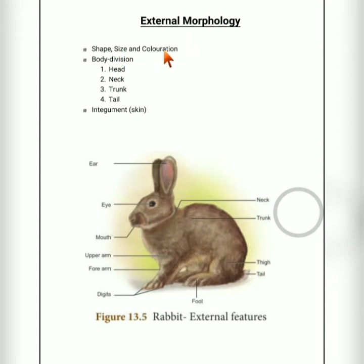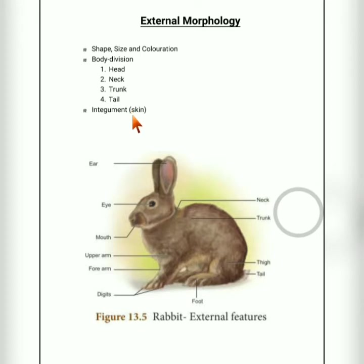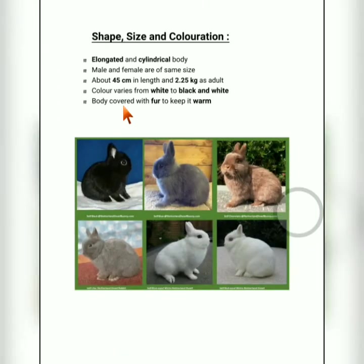Now we will move on with the external morphology. We will see three basic categories: first, shape, size and coloration of the rabbit; second, body division — that is head, neck, trunk and tail; and third, the integumentary system, which includes the protective layer called skin.